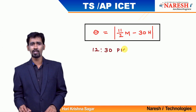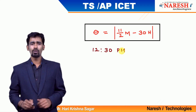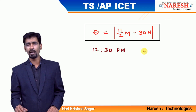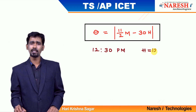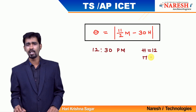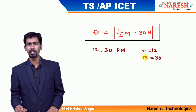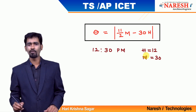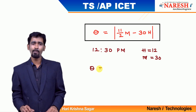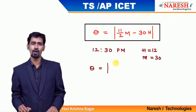At 12:30, it is clear that the hour hand is pointing towards 12, so h value is 12. 30 minutes means the minute hand is pointing towards 30, so m value is 30. H value is 12 and m value is 30. Using these two values, we have to find theta. We have the formula: theta is equal to 11/2 × m minus 30h. Remember this formula.